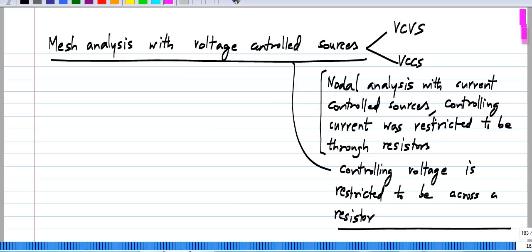If the controlling voltage is across a resistor, clearly it can be written in terms of the current through the resistor. So, it can be treated analogously to current controlled sources. That is why we introduced this simplification.